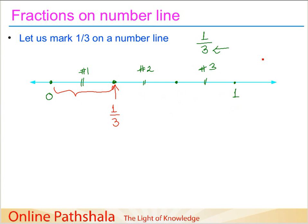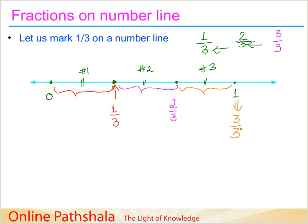What would we do if we were asked to represent 2/3? We already have 3 parts, and we need to take 2 parts. So in addition to the first part, we also consider the second part, and that becomes 2/3. And what if you are asked to represent 3/3? We go even further — this is the third part out of the three parts, so this is 3/3, which is actually equal to the whole.